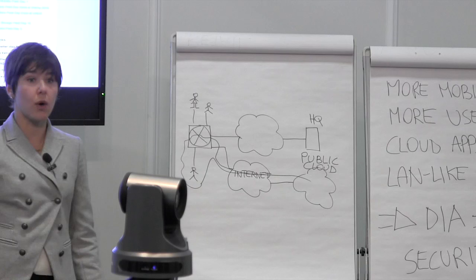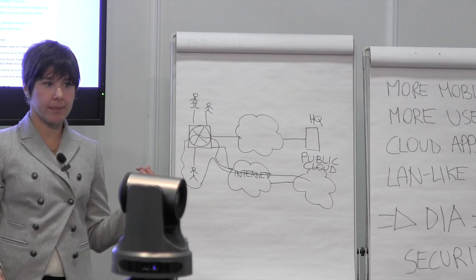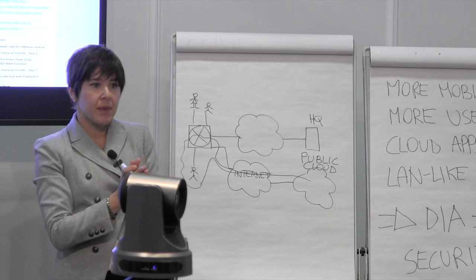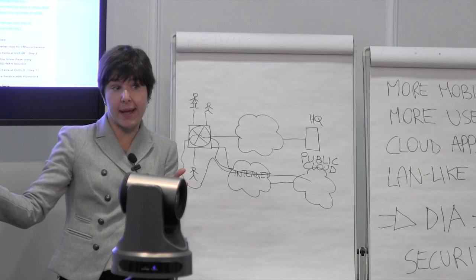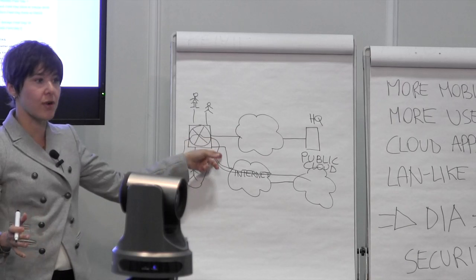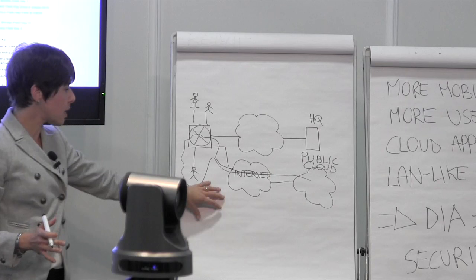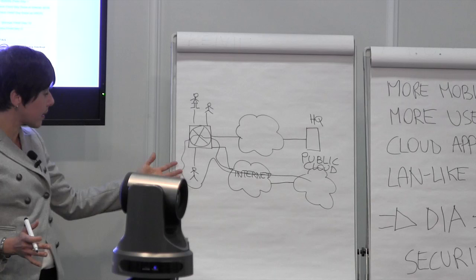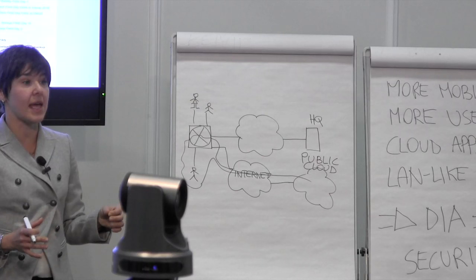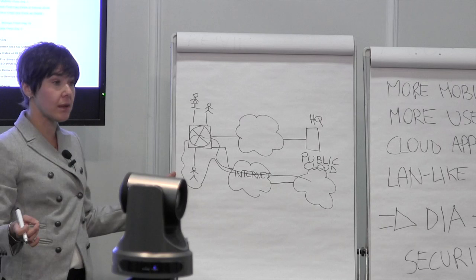Now you have a bigger problem than before. Previously, you segmented guest traffic flowing directly to the internet from your corporate traffic. Here, it's your corporate traffic that is suddenly exposed to anything that could come in from the internet. So you need to beef up your security at the branch — almost as if you were at a headquarters or data center — with a comprehensive set of advanced threat defense to deal with any potential threat from the internet that could harm your corporate network.